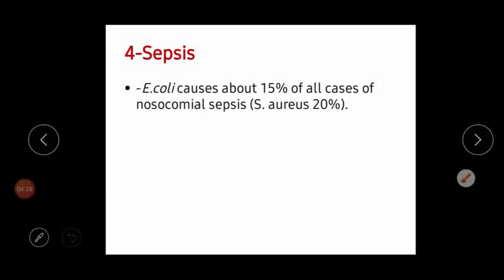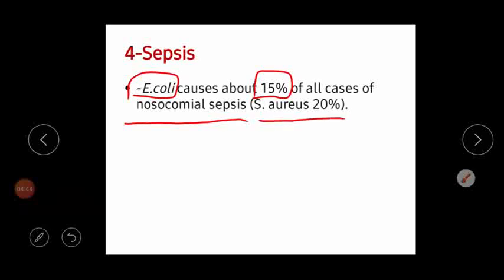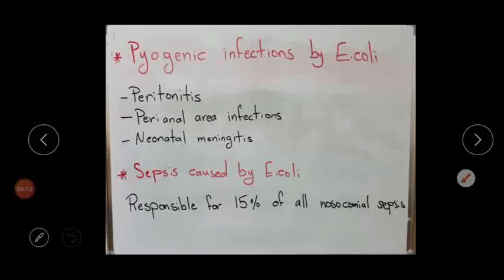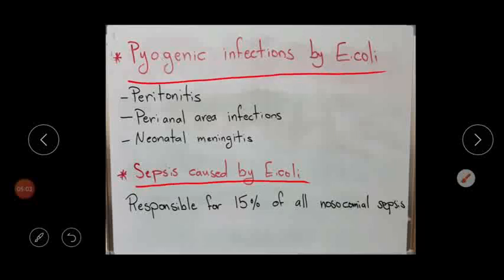Sepsis and septicemia are also caused by E. coli. It is responsible for about 15% of all cases of sepsis in hospitals — nosocomial sepsis — coming in second place after Staphylococcus aureus, which causes 20% of sepsis in the hospital. So these are the pyogenic infections and sepsis caused by E. coli, representing the third and fourth most important diseases.